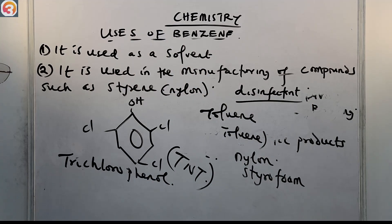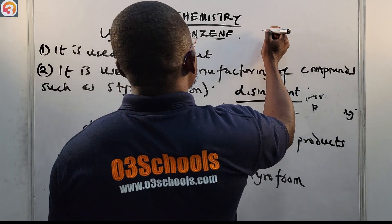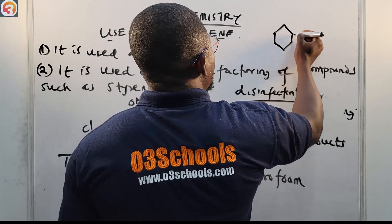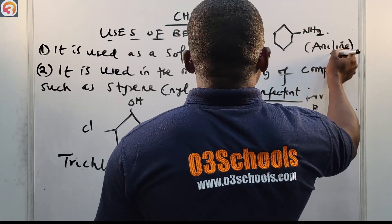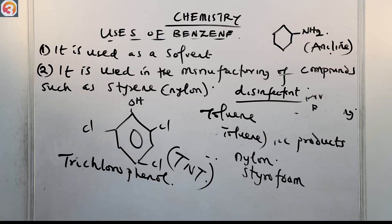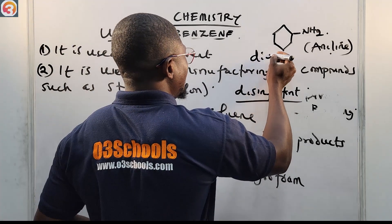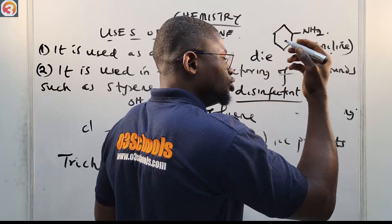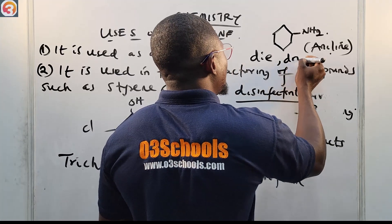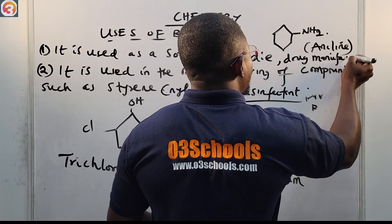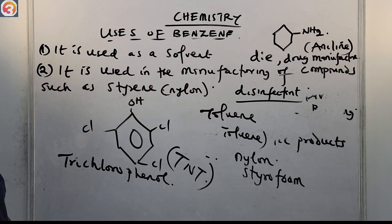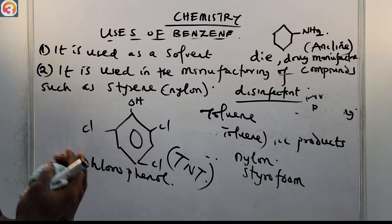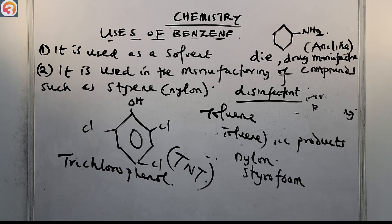Benzene is also used in the manufacture of aniline — a benzene ring with an NH2 group attached. Aniline is used as a dye (D-Y-E) and also in drug manufacture. So benzene is used in the manufacturing of other compounds such as styrene, toluene, aniline, and trichlorophenol.